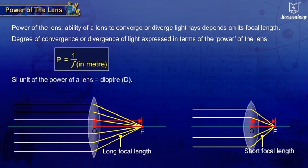The SI unit of the power of a lens is diopter, represented by D. If the focal length of a lens is 1 meter, then the power of the lens is 1 diopter.